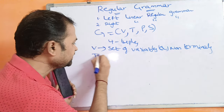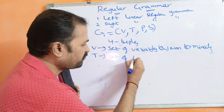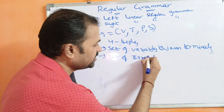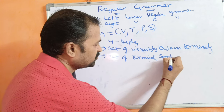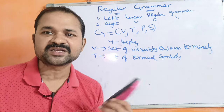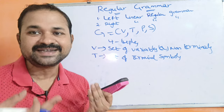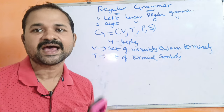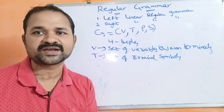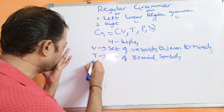Second one is T. T means set of terminals, or set of terminal symbols. Terminal symbols are represented by lowercase letters, digits, and symbols such as plus, minus, question mark, epsilon, and likewise.